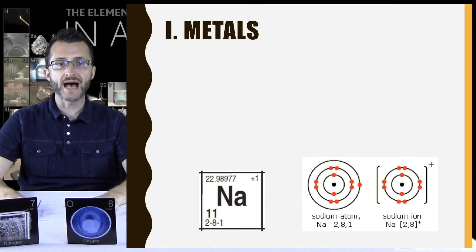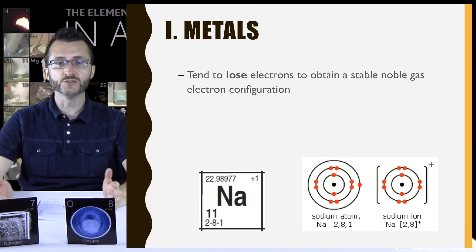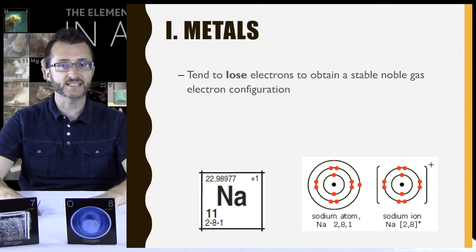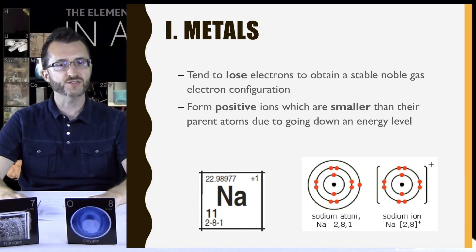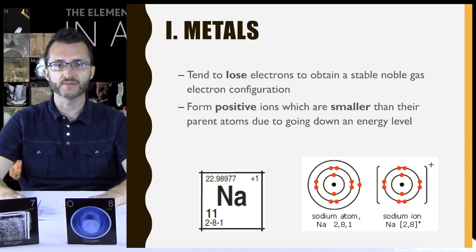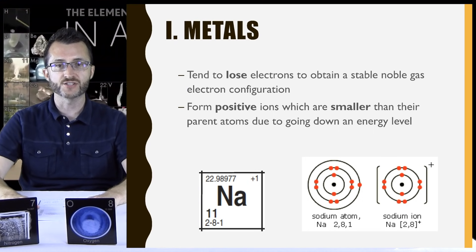Let's begin with metals. Metals tend to lose electrons to obtain a stable noble gas electron configuration. They form positive ions, which are smaller than their parent atoms due to going down an energy level.